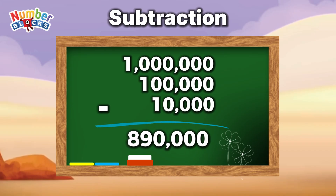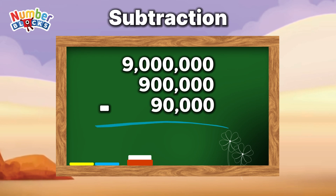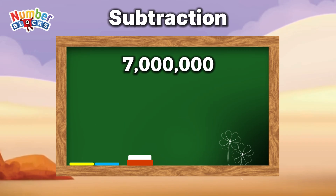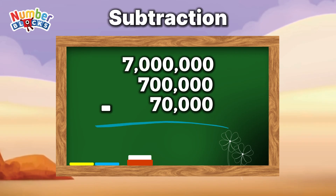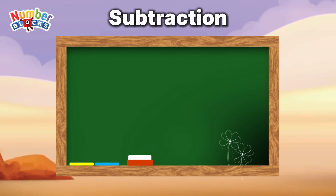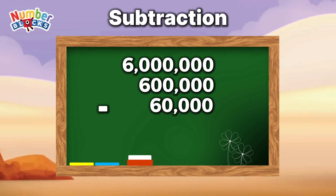9,000,000 minus 900,000 minus 90,000 is equals 8,000,000. 7,000,000 minus 700,000 minus 70,000 is equals 6,230,000. 6,000,000 minus 600,000 minus 60,000 is equals 5,340,000.